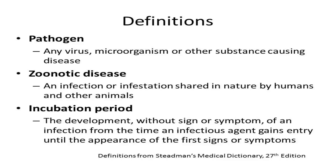When we use the term zoonotic pathogen, that does not always mean that this pathogen has been transmitted from an animal to a person. It just means that both people and animals are capable of becoming sick from the same pathogen. A disease's incubation period is typically defined as the time between when a person or animal is exposed to a disease and that person or animal starts to become ill from that disease.